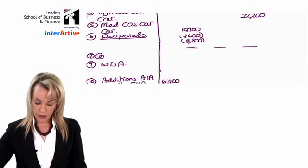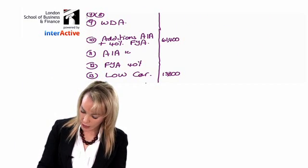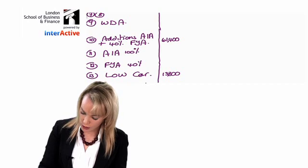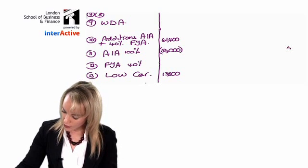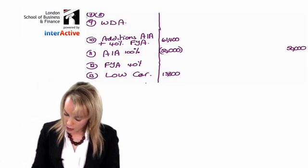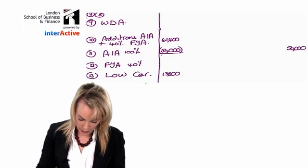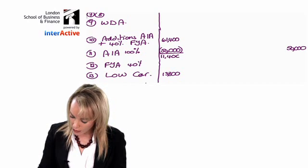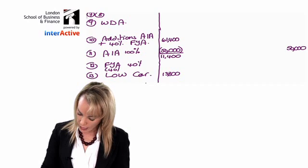Once you've got all the additions and disposals onto the pro forma at the right place, the next thing is to work out the allowances. We're going to work out the AIA at 100% first, but remember the maximum is 50,000. The difference between these two figures is about 11,400, and the balance gets a 40% FYA.